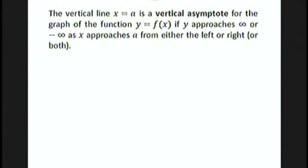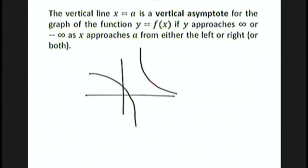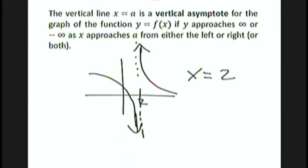The vertical line x equals a is a vertical asymptote for the graph of y equals f of x if y approaches infinity or minus infinity as x approaches a from either the left or the right, or both. For example, as x approaches 2 from the right, we go off to infinity, and as x goes to 2 from the left, we go off to minus infinity. So x equals 2 is a vertical asymptote for that function.